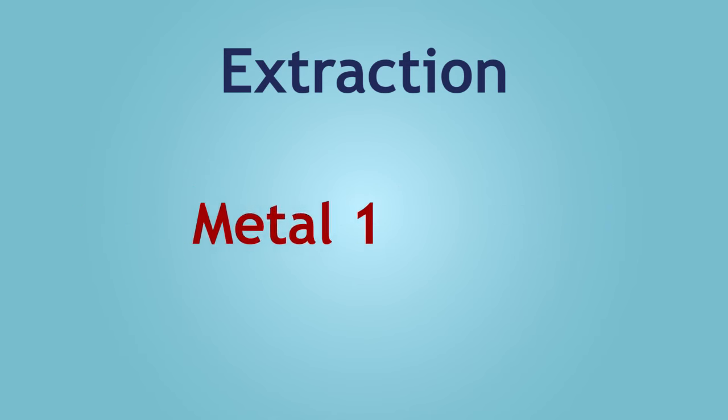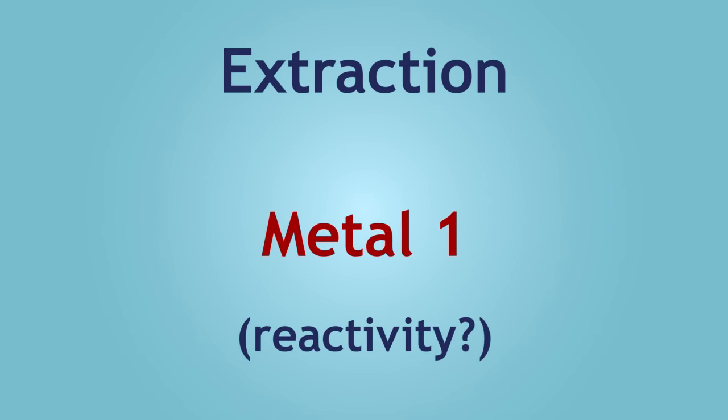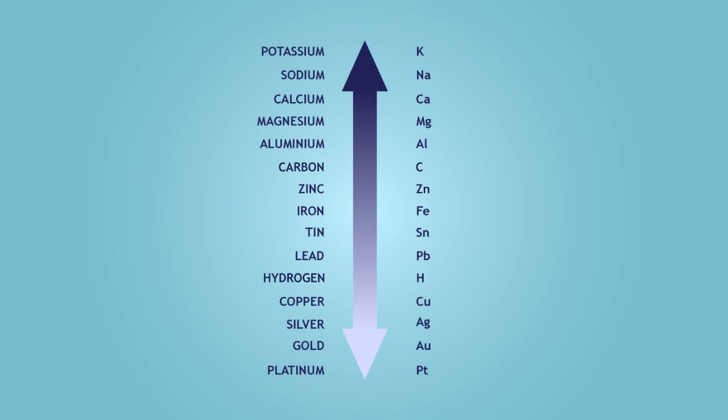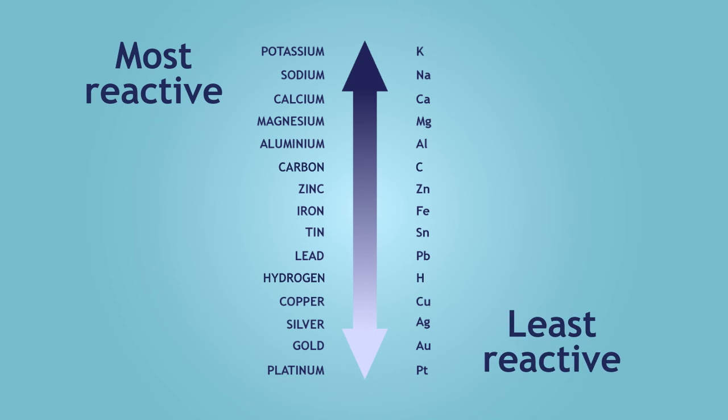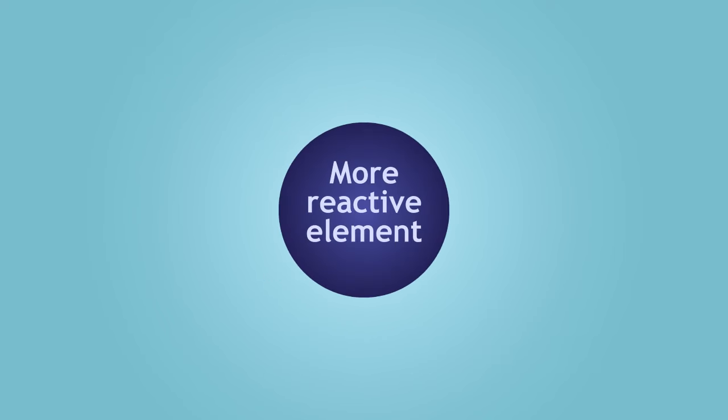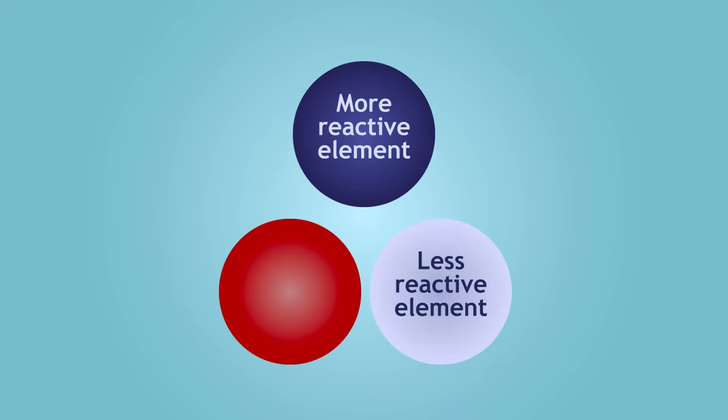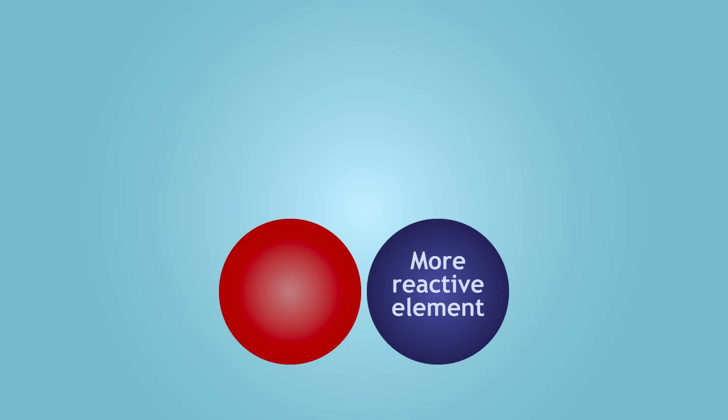Now before we can extract a selected metal, we must first consider its reactivity by looking at this reactivity table. The most reactive metals are at the top of the series, and the least reactive at the bottom of the series. Although carbon and hydrogen are not metals, they are still included in the table for comparison purposes. A more reactive element can displace a less reactive element in a compound.